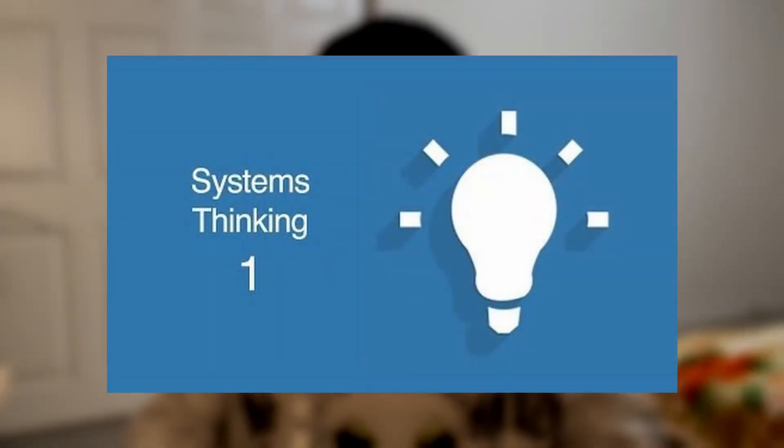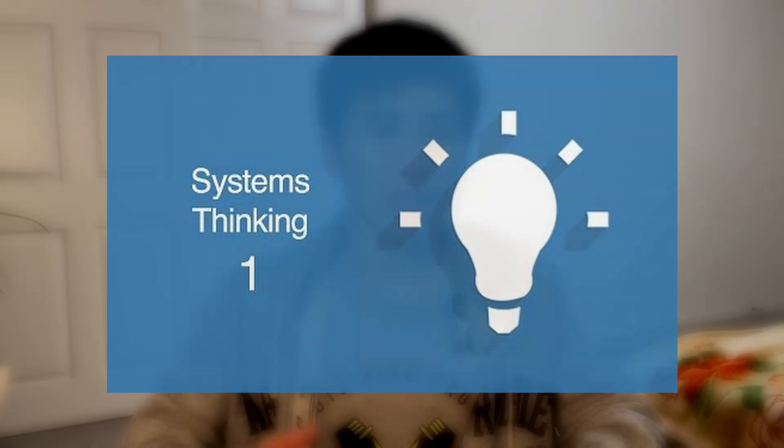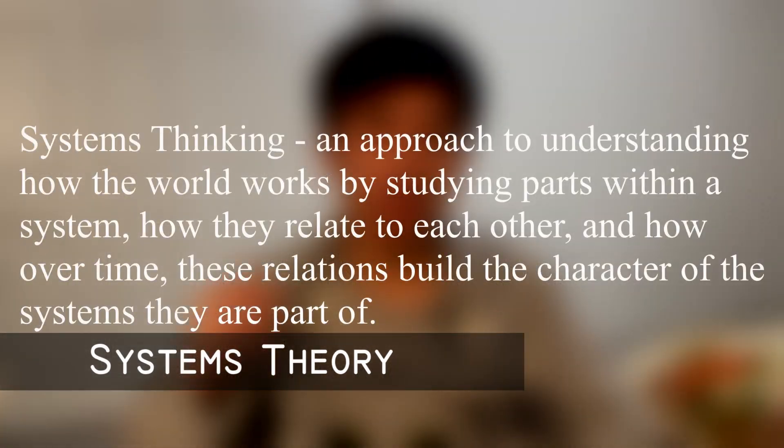The second source I used was a video series called Systems Thinking Course by the YouTube channel Systems Innovation. This series provides an introduction to systems thinking in a video infographic format, probably more suited to visual and aural learners. I also used Google to assign proper credit to quotes, verify facts, and improve the syntax of this video. Otherwise, all other ideas presented here were synthesized by me.